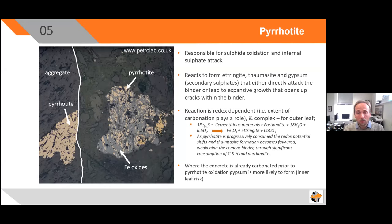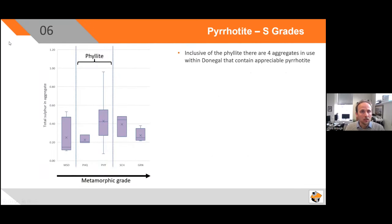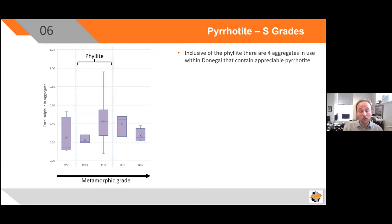It's important to note that there are other aggregates in use in County Donegal that contain pyrrhotite, as expected given the nature of the Grampian orogeny and the continuum between low-grade metasediments and higher-grade schists and amphibolites. This box-and-whisker chart shows the range of total sulfur values in different aggregates in use within County Donegal. The two in the middle — PHQ and PHY — are the two subtypes of the phyllites. Along the x-axis is increasing metamorphic grade, and the y-axis shows total sulfur calculated taking into account the sulfur normally present in the cement and the density difference between cement and aggregate.